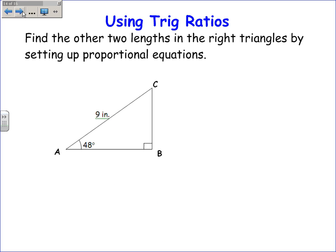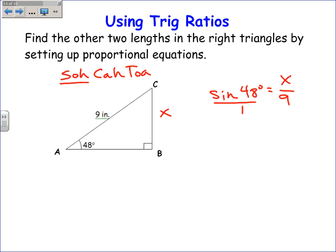Another example: if I know the hypotenuse is 9, I can find either leg. I'll find the opposite side. The sine ratio relates opposite and hypotenuse, so sine of 48 degrees equals x over 9. Cross-multiplying gives x equals 9 times sine of 48, which calculates to 6.69.